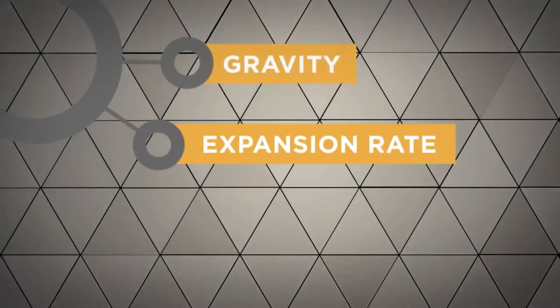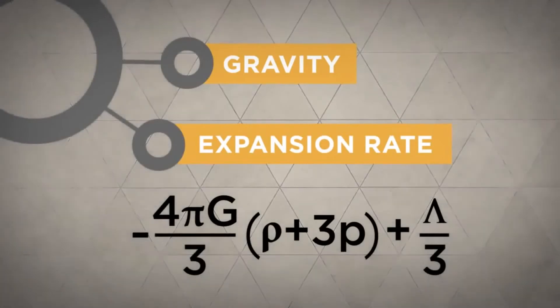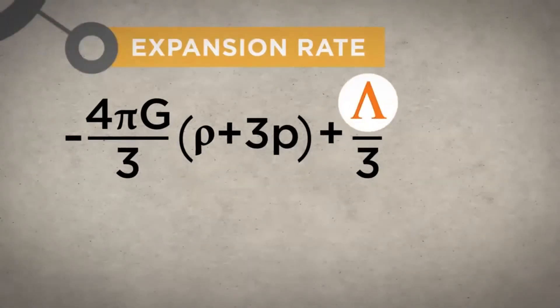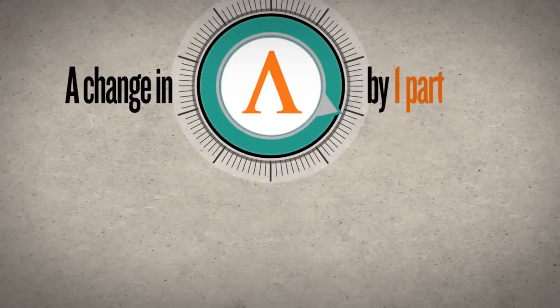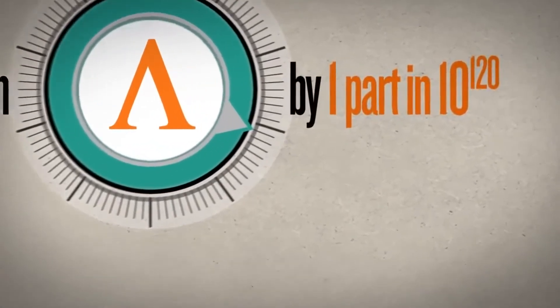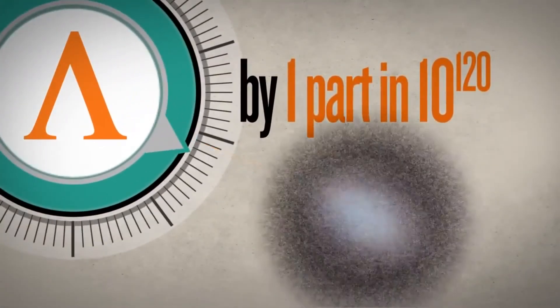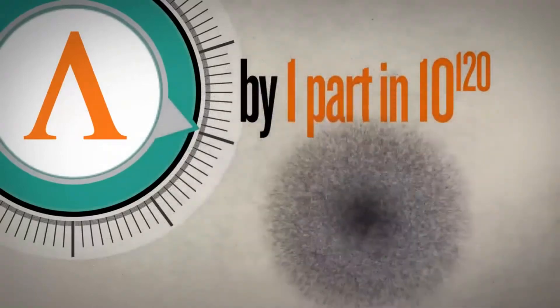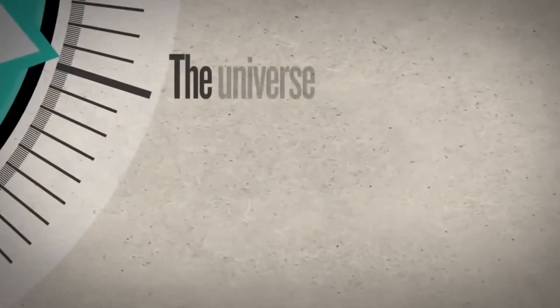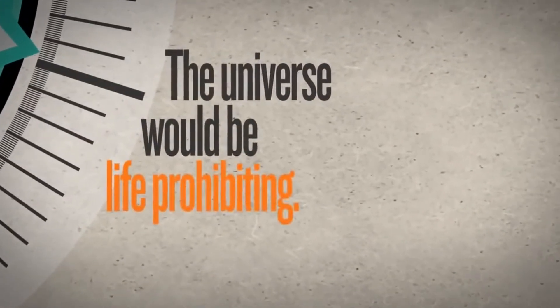Or consider the expansion rate of the universe. This is driven by the cosmological constant. A change in its value by a mere 1 part in 10 to the 120th parts would cause the universe to expand too rapidly or too slowly. In either case, the universe would again be life-prohibiting.